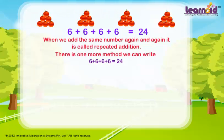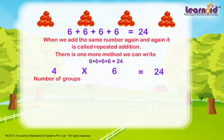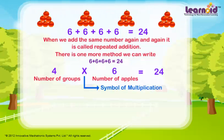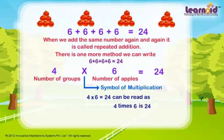There is one more method. We can write 6 plus 6 plus 6 plus 6 is equal to 24, or 4 into 6 is 24. Here, 4 is the number of groups and 6 is the number in each group. Cross is the symbol of multiplication. 4 into 6 is 24, which can be read as 4 times 6 is 24, or 4 into 6 is equal to 24.